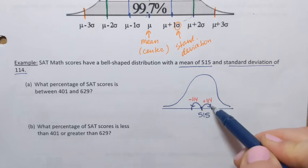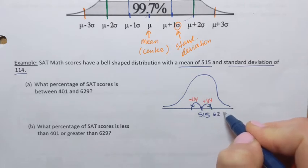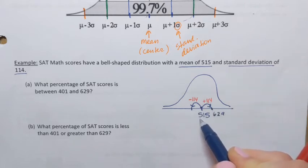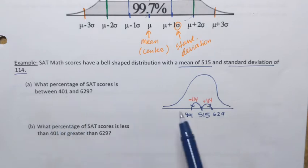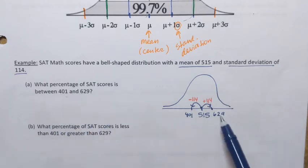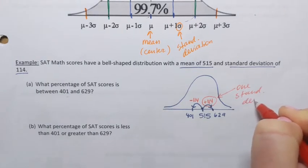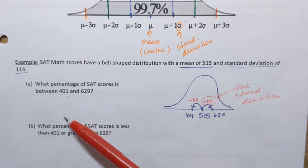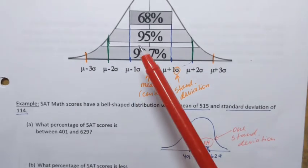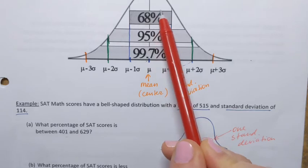If I add 114 to 515, I get 629. And if I subtract 114 from 515, I get 401. These are exactly the numbers in the question. So I was able to obtain this range by adding and subtracting one standard deviation. Since this range represents one standard deviation away from the mean, this indicates, according to the empirical rule, that 68% of SAT scores will be in that range.